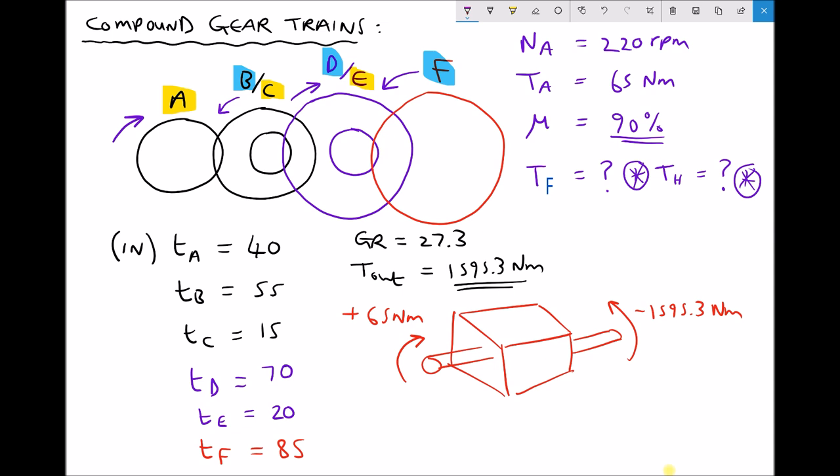Now we'll call that negative since it's in the anticlockwise direction. Now here's the important thing: in order for that gearbox to be in static equilibrium, we're going to need an additional torque in the clockwise direction. Because if we didn't have an additional torque in the clockwise direction, then the gearbox would spin in the anticlockwise direction. It would spin because the torque in the anticlockwise direction is significantly higher. So we need to apply a balancing torque. Now the magnitude of that balancing torque is just going to be the difference between our two torque values there. So the magnitude of TH is going to be 1595.3 minus 65. All I'm doing is finding the difference between those two values, which equals 1530.3 newton meters.